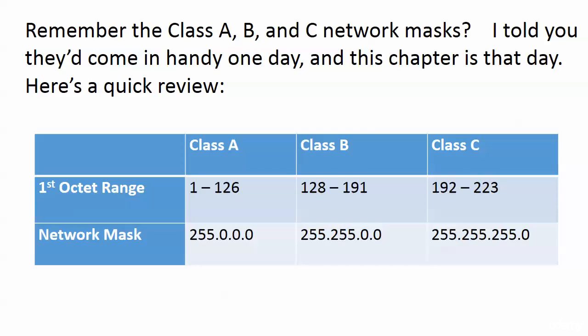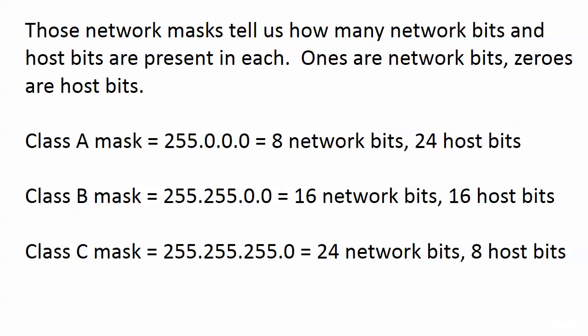These are the network masks. The Class A mask: eight network bits and 24 host bits. Again, the network bits are set to one, host bits are set to zero. Class B gives us 16 network bits and 16 host bits. Class C: 24 network bits and eight host bits.